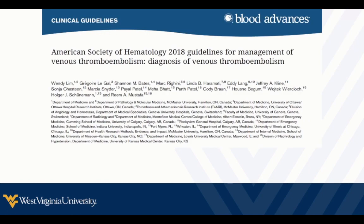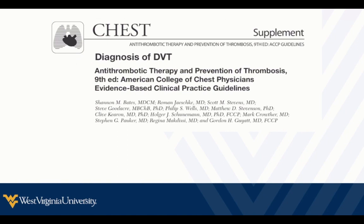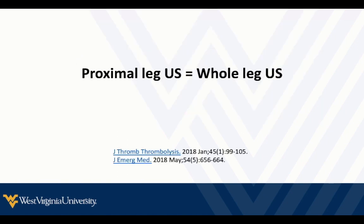Much of the decision-making framework comes from the American Society of Hematology guidelines — the latest update I have is 2018 — which are very similar to guidelines from the American College of Chest Physicians. They really don't differentiate proximal leg ultrasound (what we do at the point of care) from a whole-leg ultrasound, citing both as pretty much equivalent. Not without controversy, but from a guideline and evidence-based perspective we can treat them as equivalent. The emergency medicine literature similarly suggests a quality DVT point of care ultrasound for the lower extremity is equivalent to the proximal leg ultrasound.